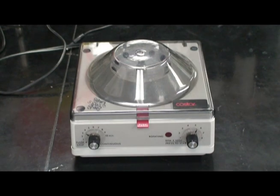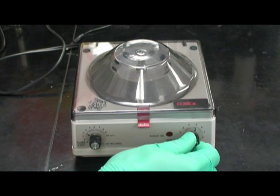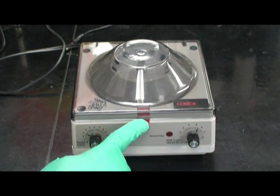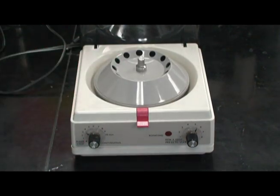This is a smaller microfuge device. Once again, the time and speed can be adjusted by the knobs. To open the lid, press down on the red tab. The current rotor is designed for 0.5 milliliter microfuge tubes.